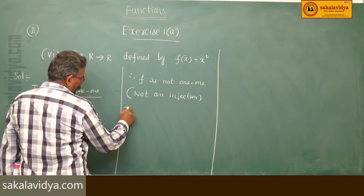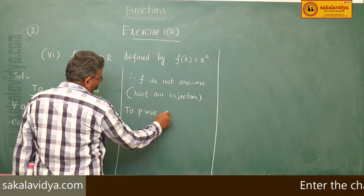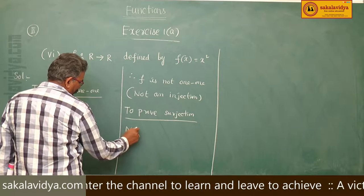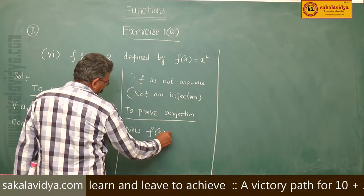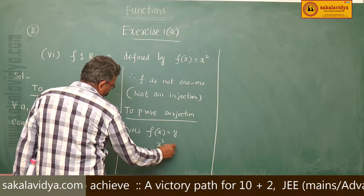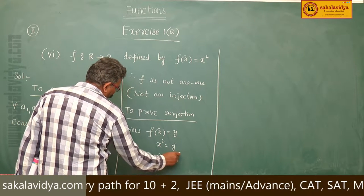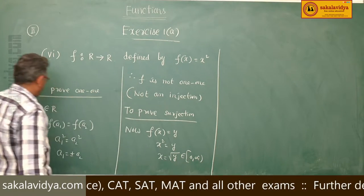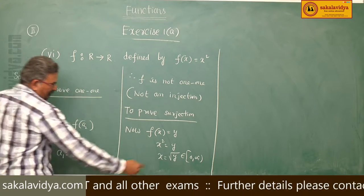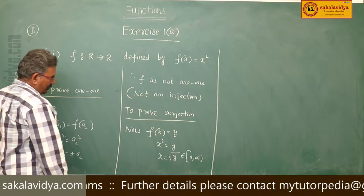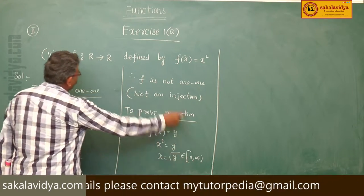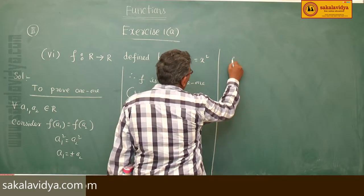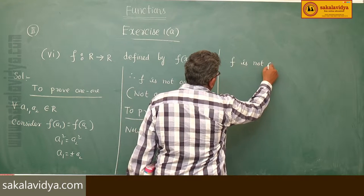For surjection: f(x) = y implies x² = y, so x = √y, where √y belongs to [0, ∞). Here the codomain is R but the range is [0, ∞). Since the range is not equal to the codomain — range is only a subset of codomain — f cannot be a surjection.